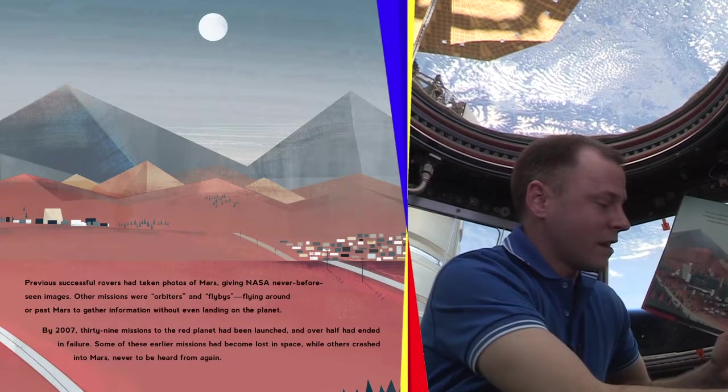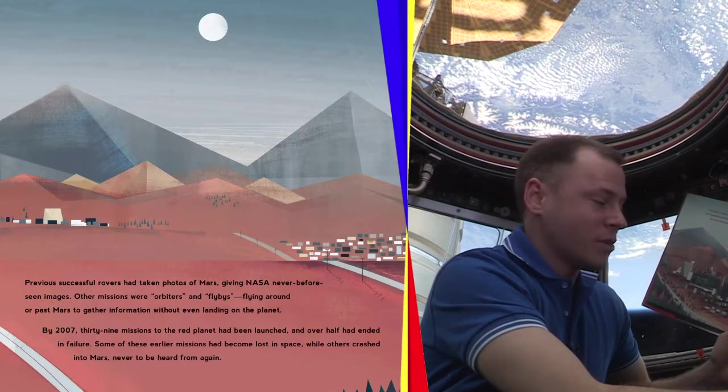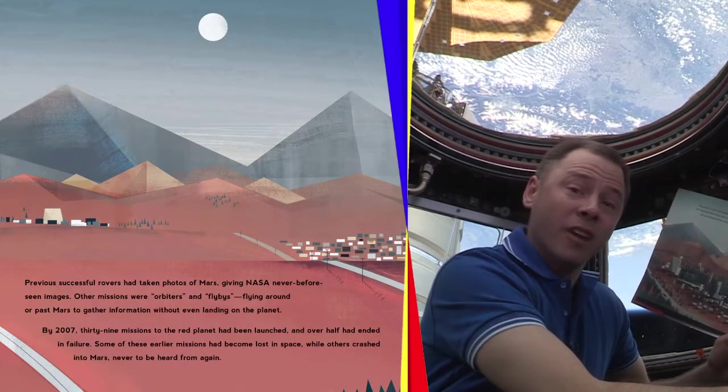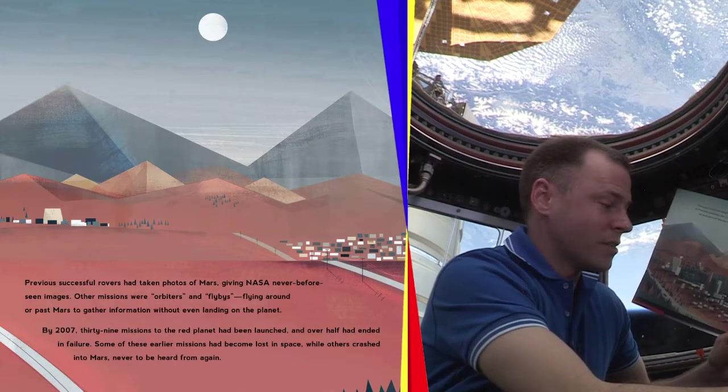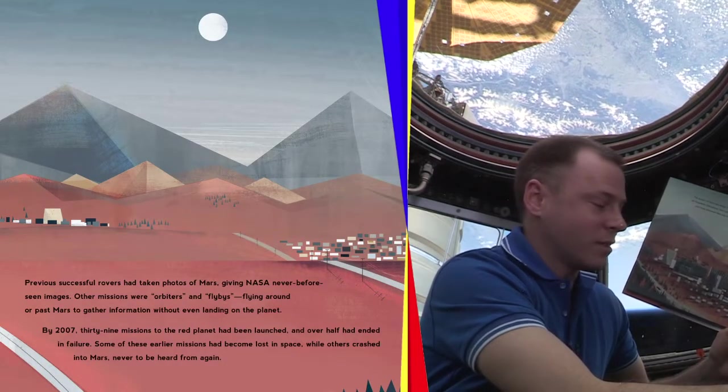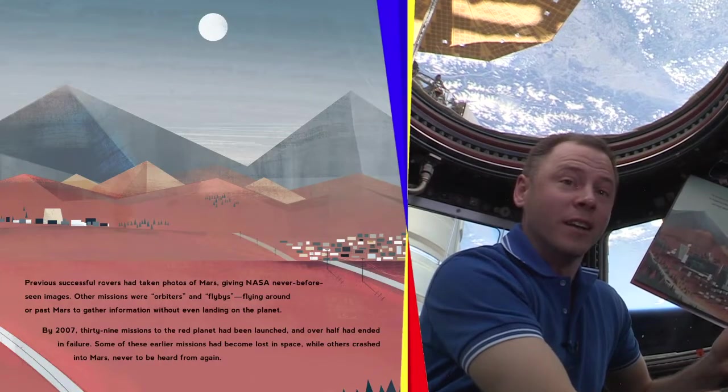By 2007, 39 missions to the Red Planet had been launched, and over half had ended in failure. Some of these earlier missions had become lost in space, while others crashed into Mars, never to be heard from again.